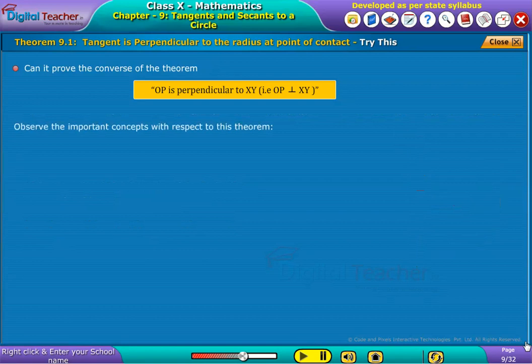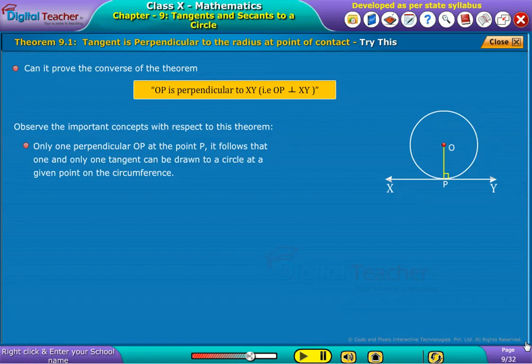Observe the important concepts with respect to this theorem. Only one perpendicular OP at the point P. It follows that one and only one tangent can be drawn to a circle at a given point on the circumference.